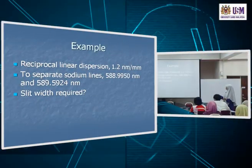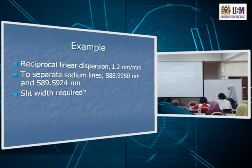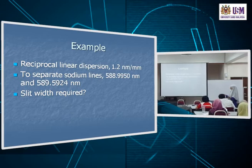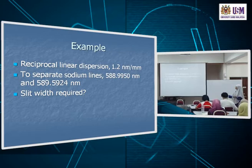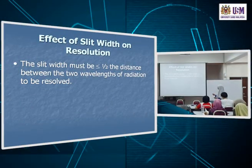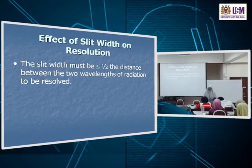To see how that equation is used: if the reciprocal linear dispersion D⁻¹ is 1.2 nm/mm, and you want to separate two very close sodium lines at 588.9950 and 589.5924 nm, you need to determine what slit width W is required. The slit width must be equal to or less than half the distance between the two wavelengths.